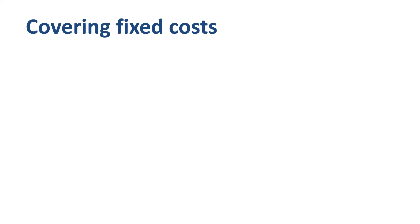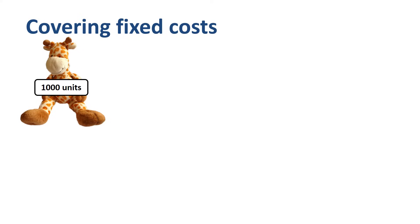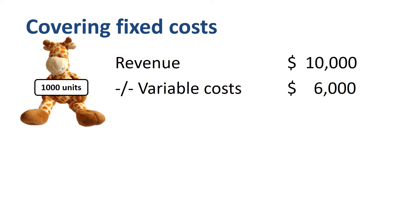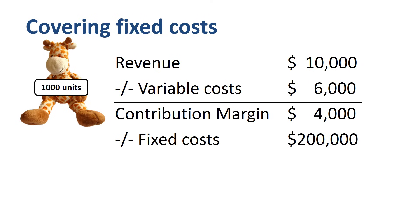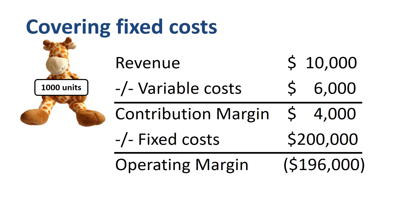What does the contribution margin look like in total when we produce and sell 1,000 units? Revenue will be $10,000, variable cost $6,000, and contribution margin $4,000. We have $4,000 of contribution margin available to cover fixed costs. Unfortunately, the fixed costs are $200,000, so $196,000 of fixed costs are not covered. The company makes a loss at the operating margin level of $196,000.